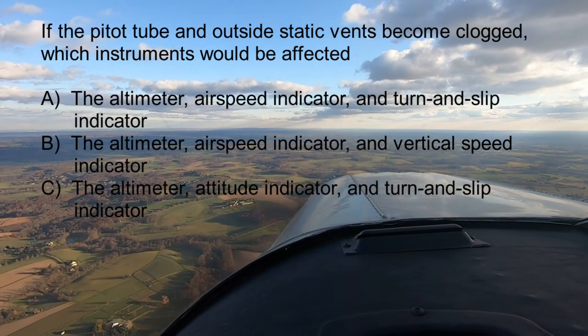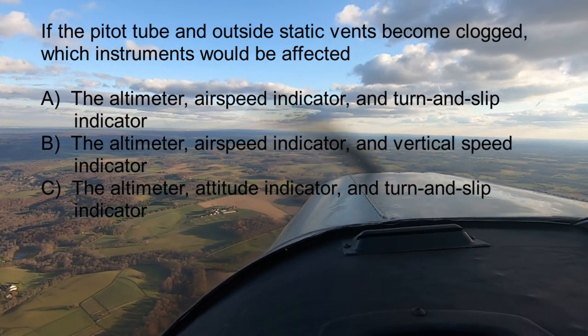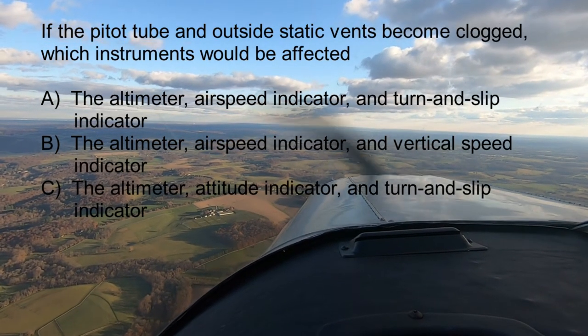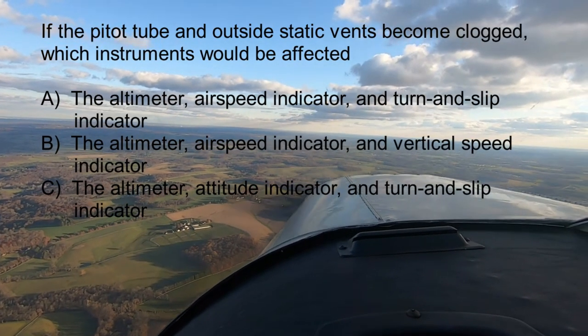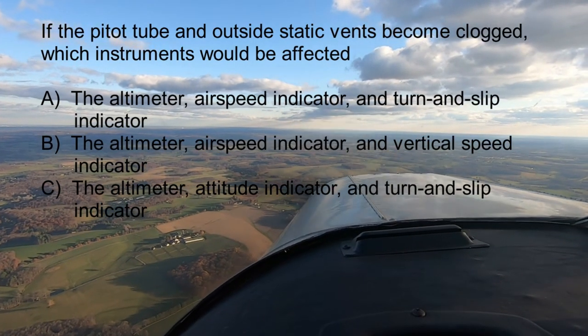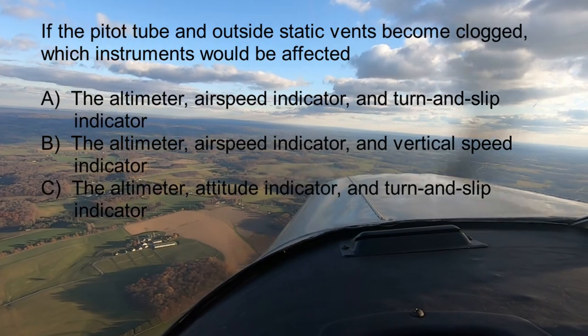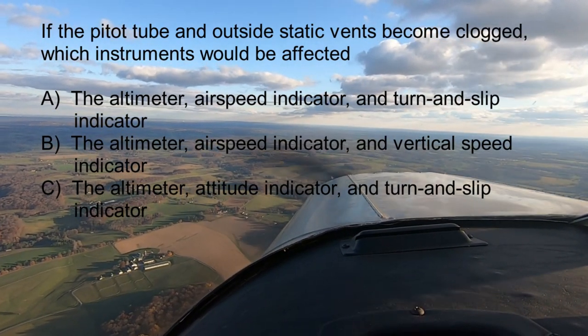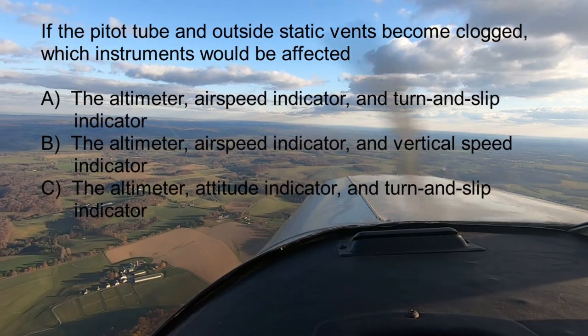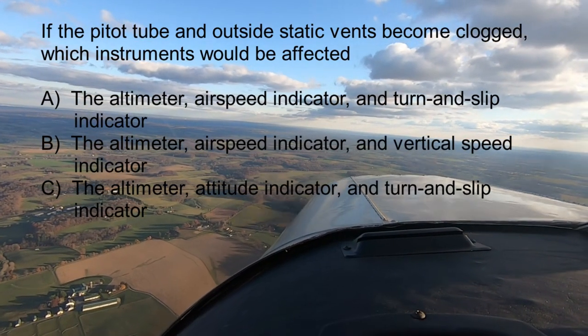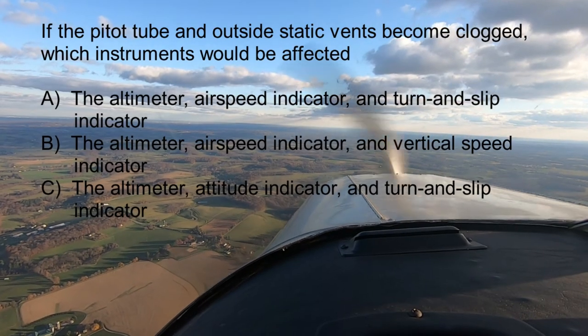Question number two: if the pitot tube and outside static vents become clogged, which instruments would be affected? A, the altimeter, airspeed indicator, and turn and slip indicator; B, the altimeter, airspeed indicator, and vertical speed indicator; or C, the altimeter, attitude indicator, and turn and slip coordinator. The answer is B — the altimeter, airspeed indicator, and vertical speed indicator. The pitot-static system affects the altimeter, airspeed indicator, and vertical speed indicator. The other answers include either the turn and slip coordinator or the attitude indicator, and both of these are gyroscopic instruments.